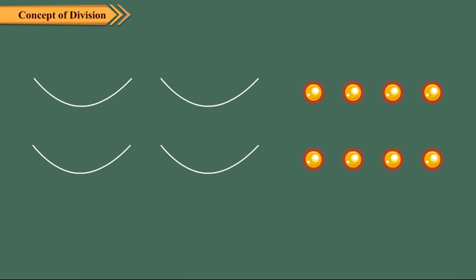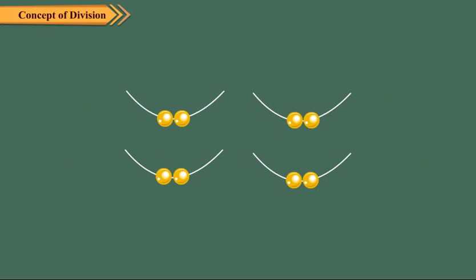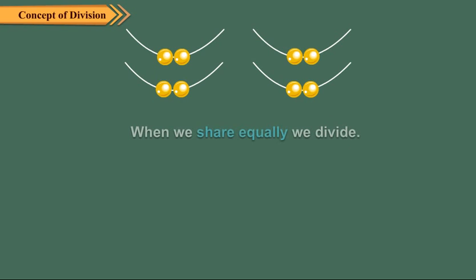Eight beads have to be put equally in four strings. How many beads on each string can you have? First we put one bead on each string. Now we have remaining four beads. So we put one more bead in each string. Now we have two beads in each string.